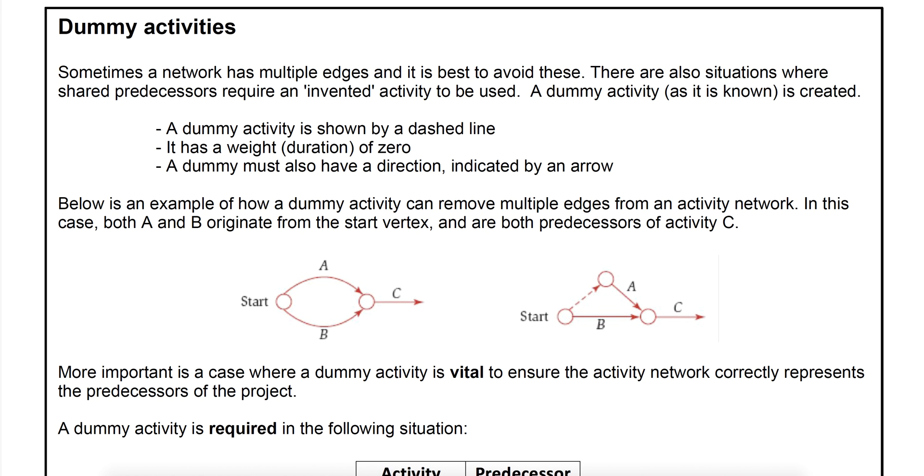So dummy activities - the main reason we want to do it is sometimes there is an issue with our predecessors. A dummy activity is actually invented, it's not a real activity. The reason we have to put it in is to make our network work, so the diagram can actually represent the predecessors appropriately or accurately.